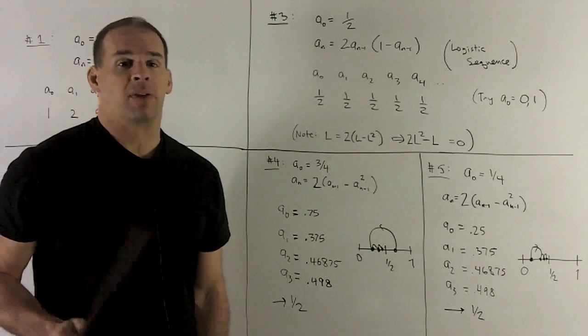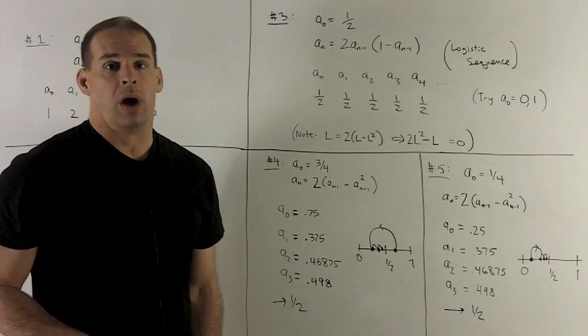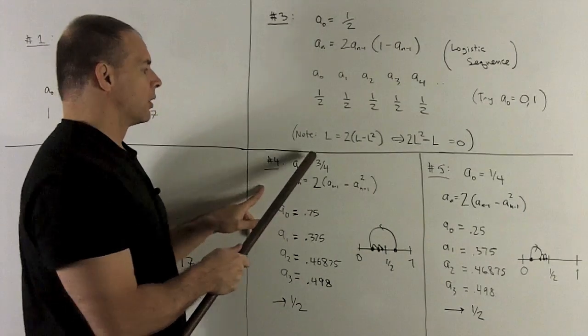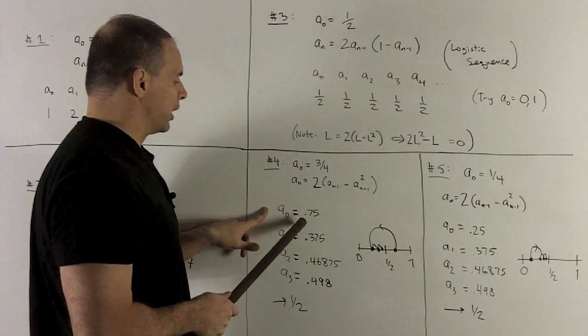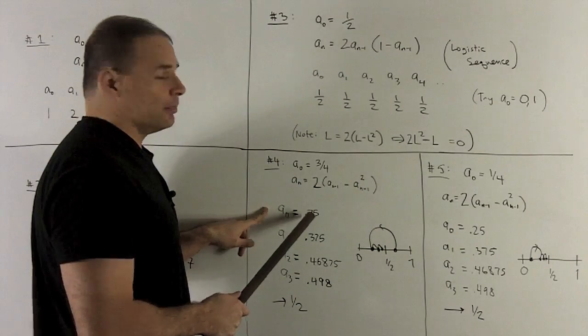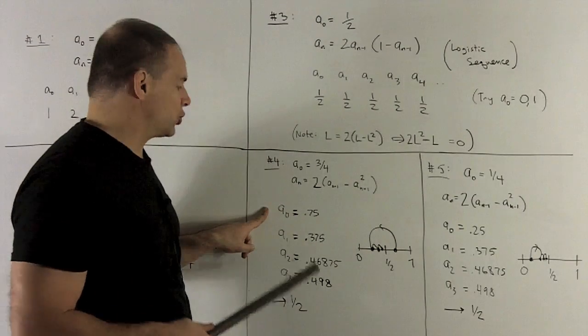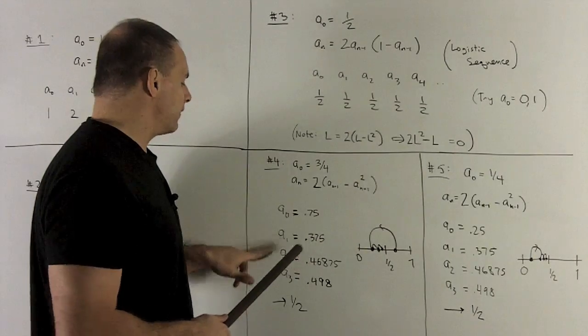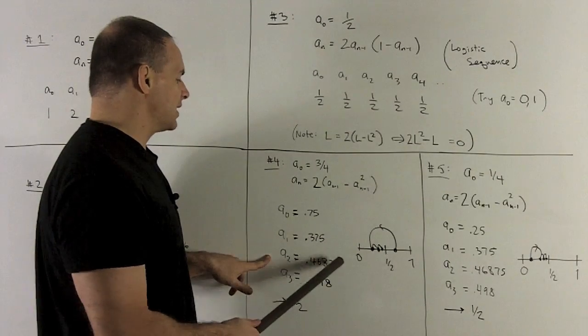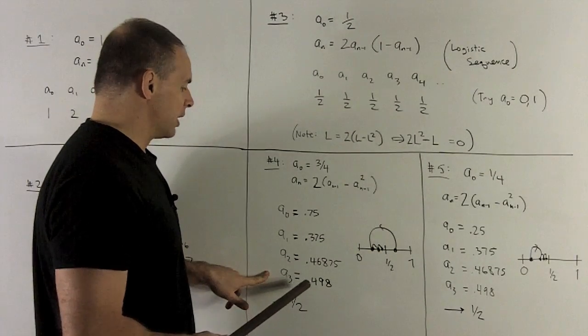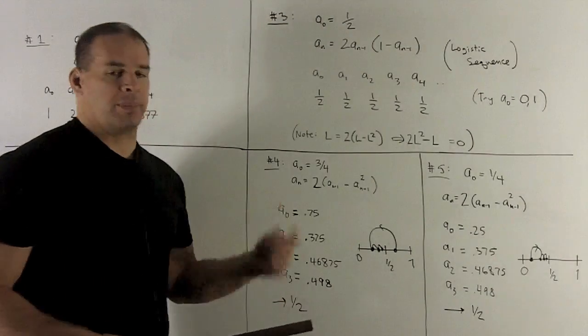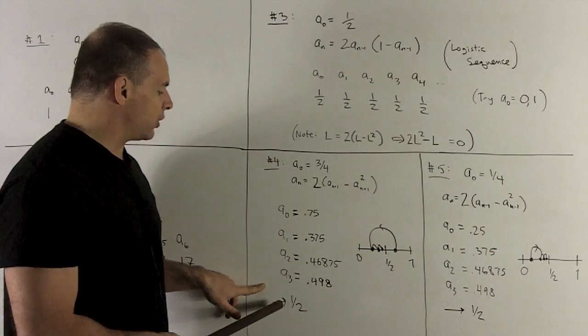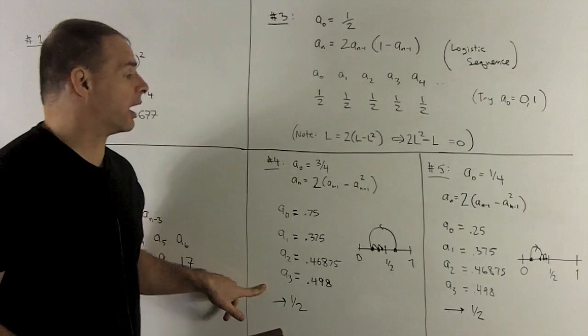Now, let's try some other points between 0 and 1. So I'm going to go with 3 quarters. So we put 3 quarters in, 0.75, and then you break out the calculator and just churn out a few terms. So the next term's going to be 0.375. Next term's 0.46875. Next term is 0.498. And as you keep going and going and going, you're going to see that you're going to get closer and closer to a half without ever actually getting there.